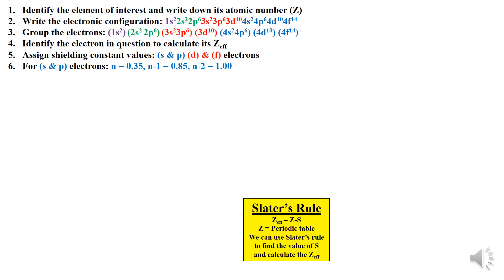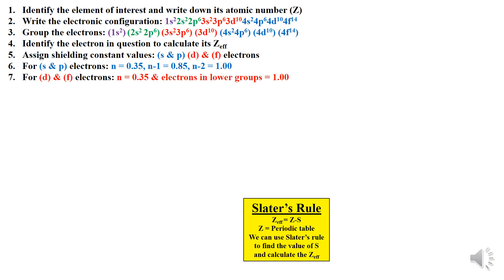For S and P electrons, the shielding constant values are as follows: for electrons in the same shell or energy level (same group), it is 0.35; for one shell lower, it is 0.85; and for two shells lower or more, it is 1. For D and F electrons, electrons in the same group are assigned 0.35, and all other electrons in lower groups are assigned 1. So it is easier to assign values for D and F electrons.